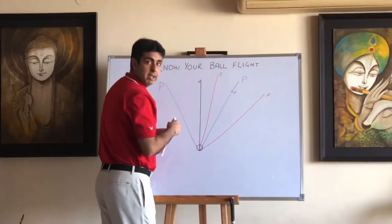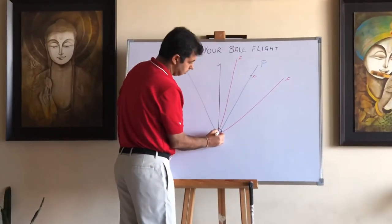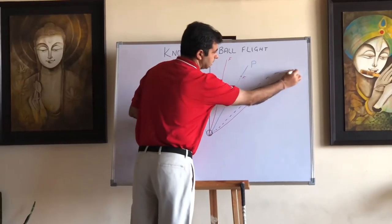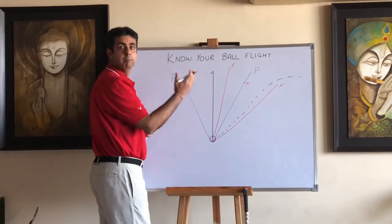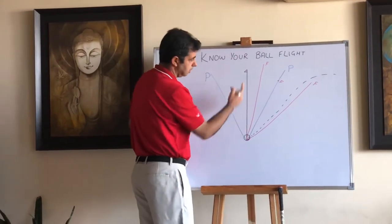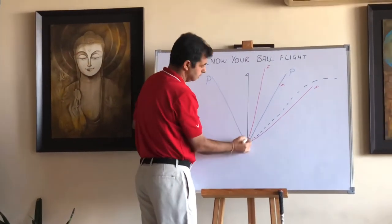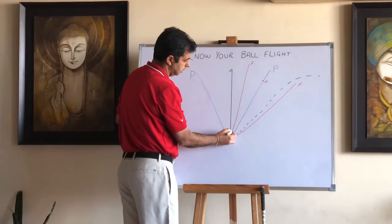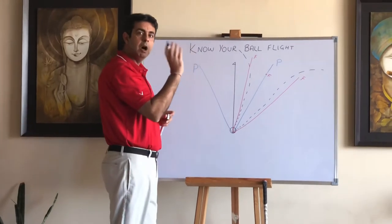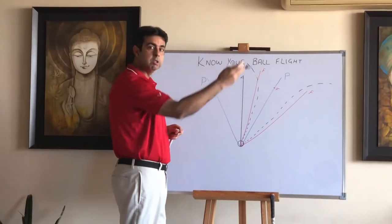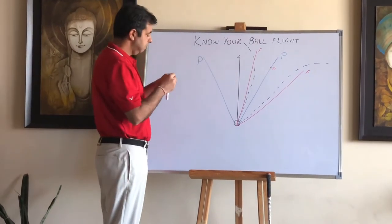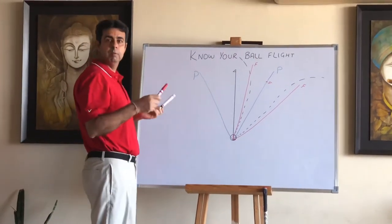For the in-to-out swing with an open face: the ball starts closer to the face, between face and path, and curves away from the path — the ball starts right and slices further right. That's a push slice. With a closed face: the ball starts closer to the face and curves away from the path — it starts right and draws back toward target. So you can see the target face is slightly right, path is more right, and the ball draws back.